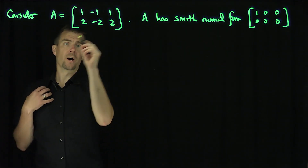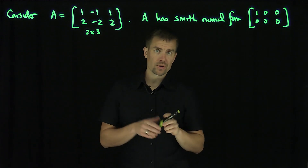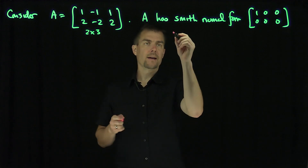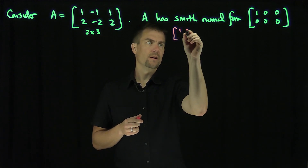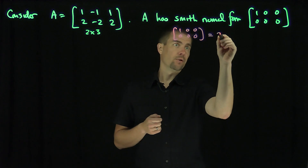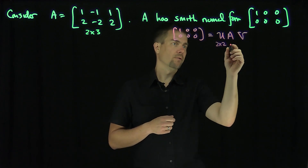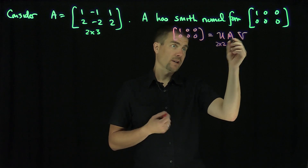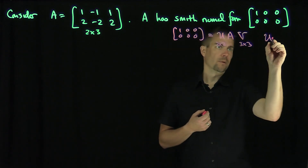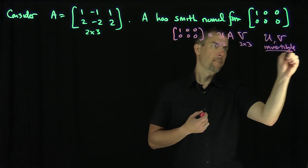The first step: A is a 2 by 3 matrix, so I need to first perform row operations. My goal is to construct matrices — I would like to write the Smith normal form as a matrix U times A times a matrix V. This matrix U is going to be a 2 by 2 invertible matrix, A is our original matrix, and V is going to be a 3 by 3 invertible matrix.